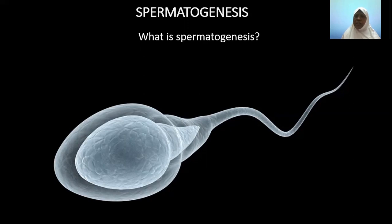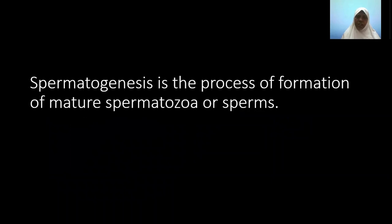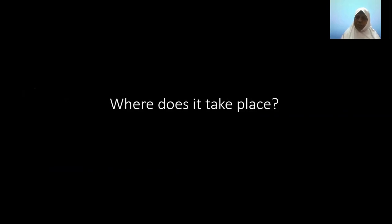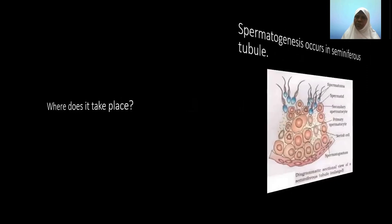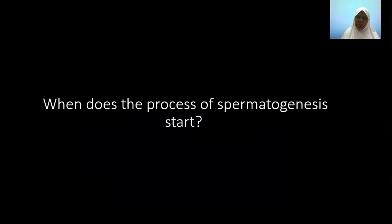We will discuss now where exactly in the male reproductive system this process occurs. Spermatogenesis is the process of formation of mature spermatozoa or sperms. This occurs particularly in the seminiferous tubule of the testis — the seminiferous tubule is the site where spermatogenesis occurs. You can look at this picture, which is a diagrammatic representation showing the section of the seminiferous tubule, where there are many developmental stages of the spermatogonia.